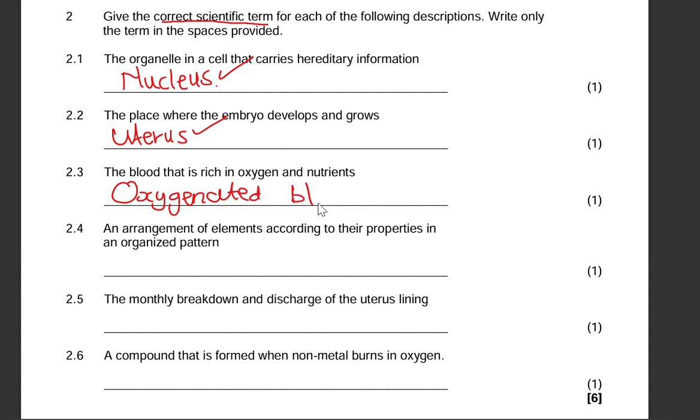2.4: the arrangement of elements according to their properties in an organized pattern. That is the periodic table of elements.